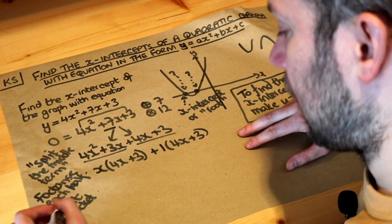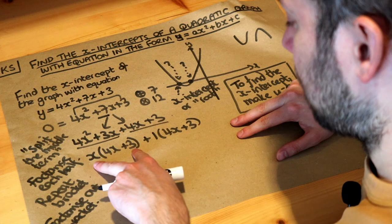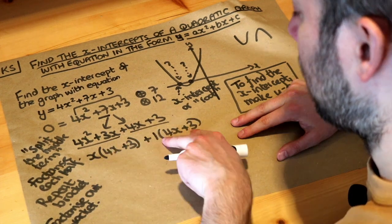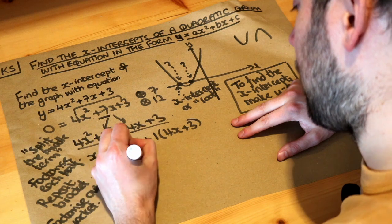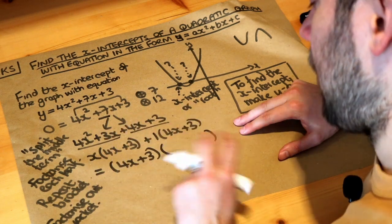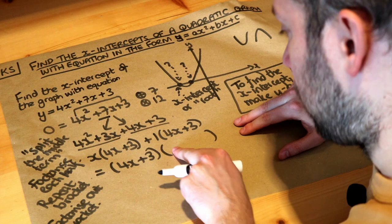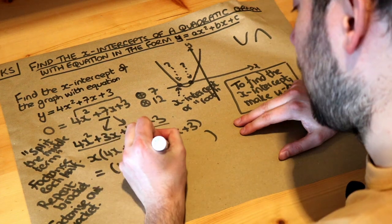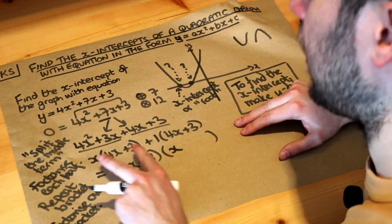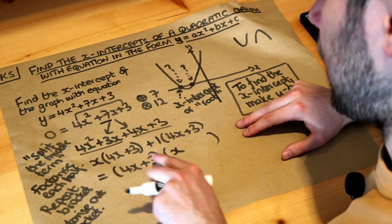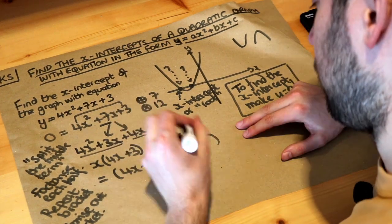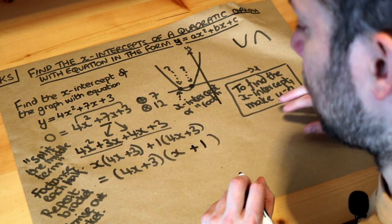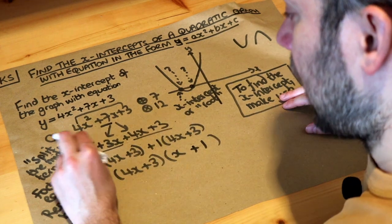And then the final thing is to factorize out the bracket. So this expression here and this expression here, they have common factors of 4x plus 3, so I'm going to factorize out the 4x plus 3. And then I think, well 4x plus 3 times what gives you this? Well it's just x. x times 4x plus 3 is x times 4x plus 3. And 4x plus 3 times what is 1 times 4x plus 3? Well it's just plus 1. So we've got that. Now I've forgotten that equals zero, so let's put it back in: equals zero.